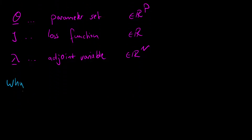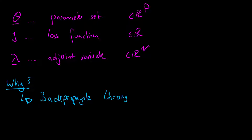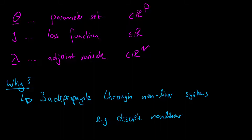Why are we doing this? The reason is that we want to backpropagate through implicit systems — in our case, non-linear systems — or equivalently, we want to do automatic differentiation through non-linear systems. Where do you find these? For example, if you discretize non-linear PDEs, such as those arising in mechanics or fluid dynamics.